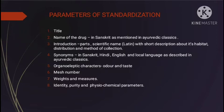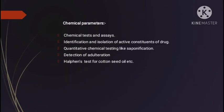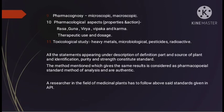Taste testing may not be done in case of poisonous drugs as indicated in the monographs. Sieve mesh number 85 is used for powdering, which may not apply for drugs containing oily substances. Metric system is employed for weights and measures. Physical parameters measure physical characteristics such as moisture content, density, optical rotation, melting point, foreign organic matter, specific gravity, viscosity, refractive index, and solubility. Chemical parameters include chemical tests and assays, identification and isolation of active constituents, quantitative chemical testing like saponification, and detection of adulteration.